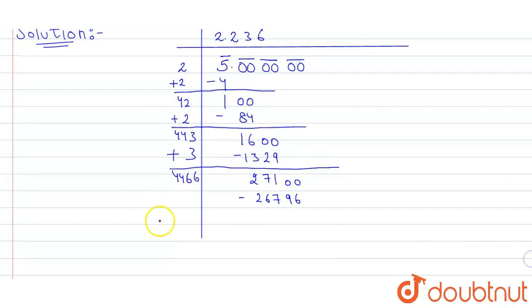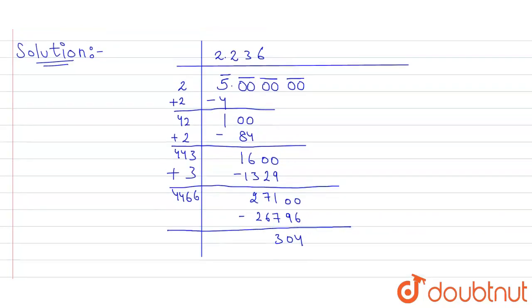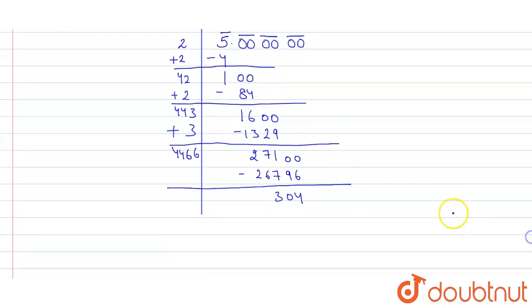Now we have to take number less than this. So 4466 into 6 is 26796. Now we will subtract this. We will get 304.